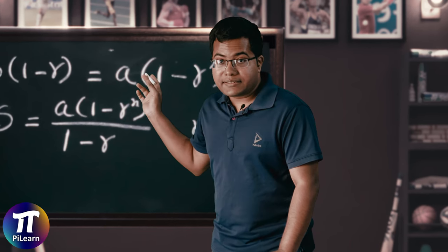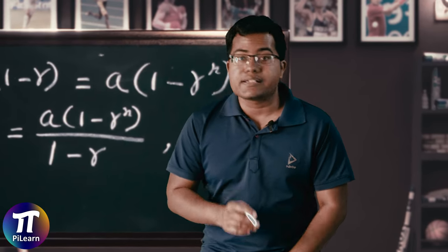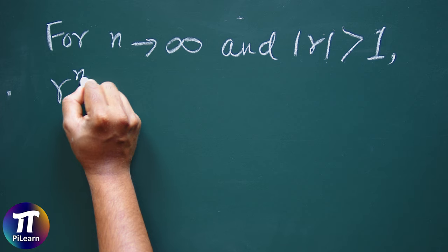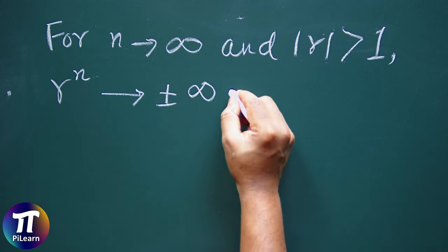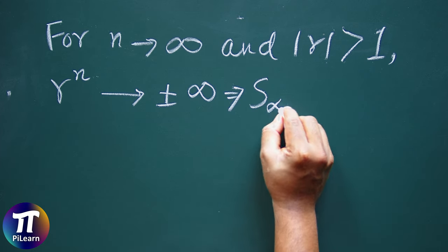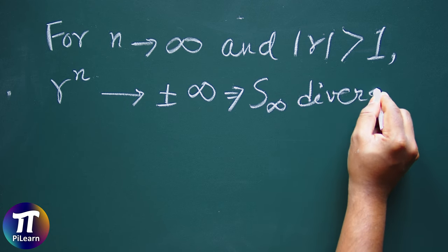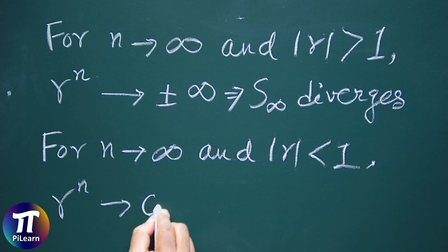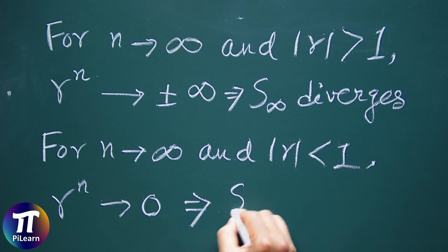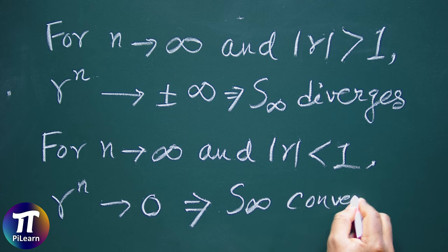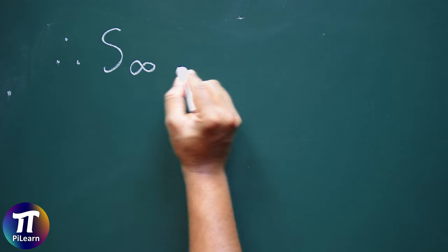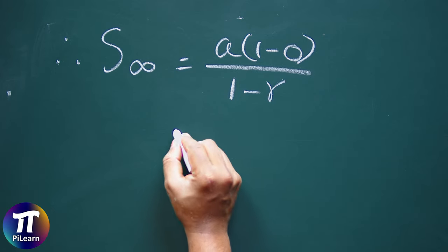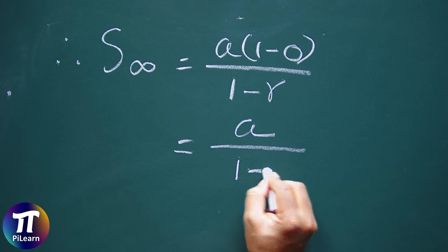When n goes towards infinity, this becomes an infinite GP series — a GP series with an infinite number of terms. For n tending to infinity and |r| > 1, r^n either goes to plus infinity or minus infinity, so the series diverges. However, if |r| < 1, then r^infinity goes to 0 and the series has a finite value — it converges. In that case, the value of the sum S_infinity is a(1 − 0) / (1 − r) = a / (1 − r).